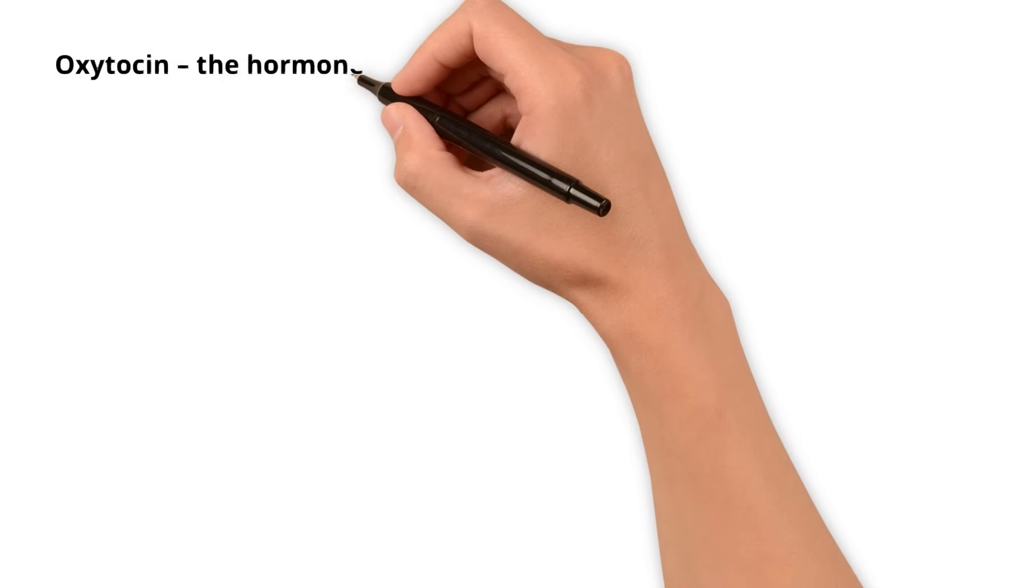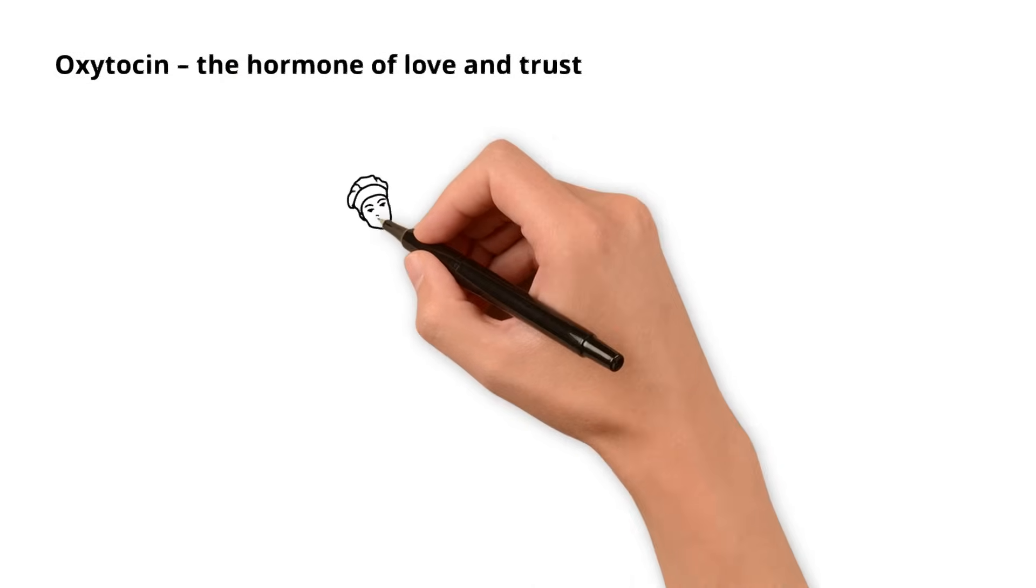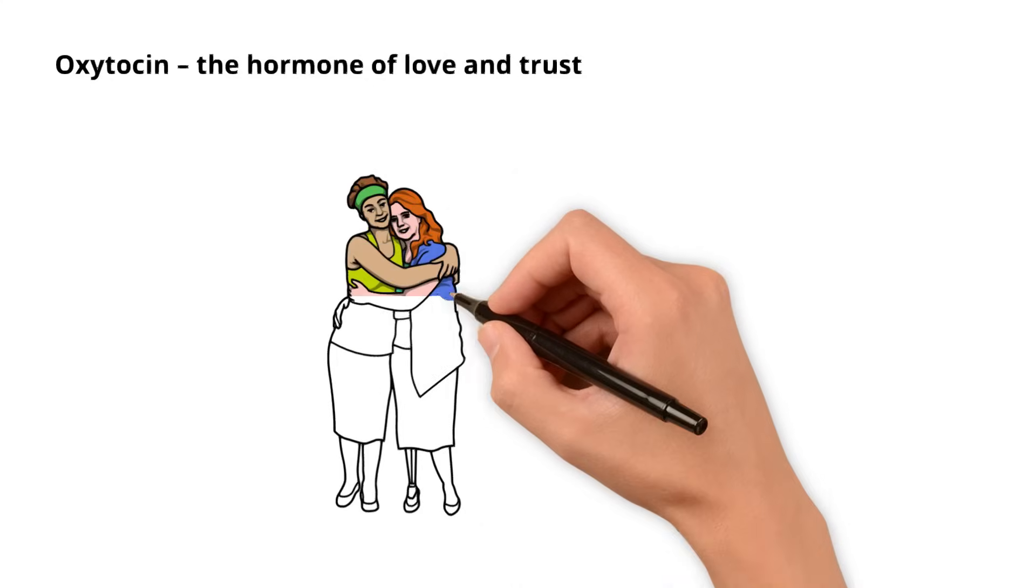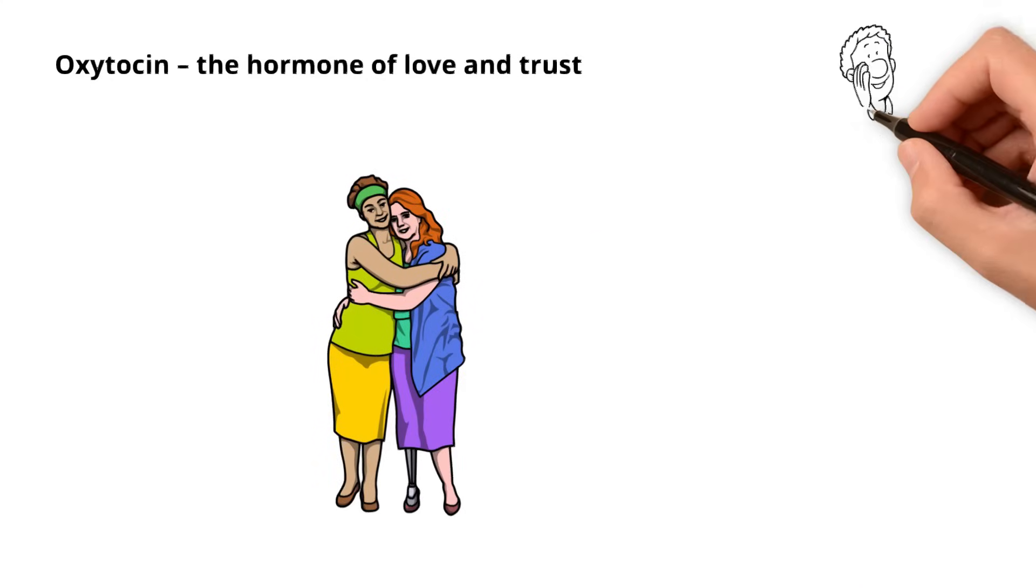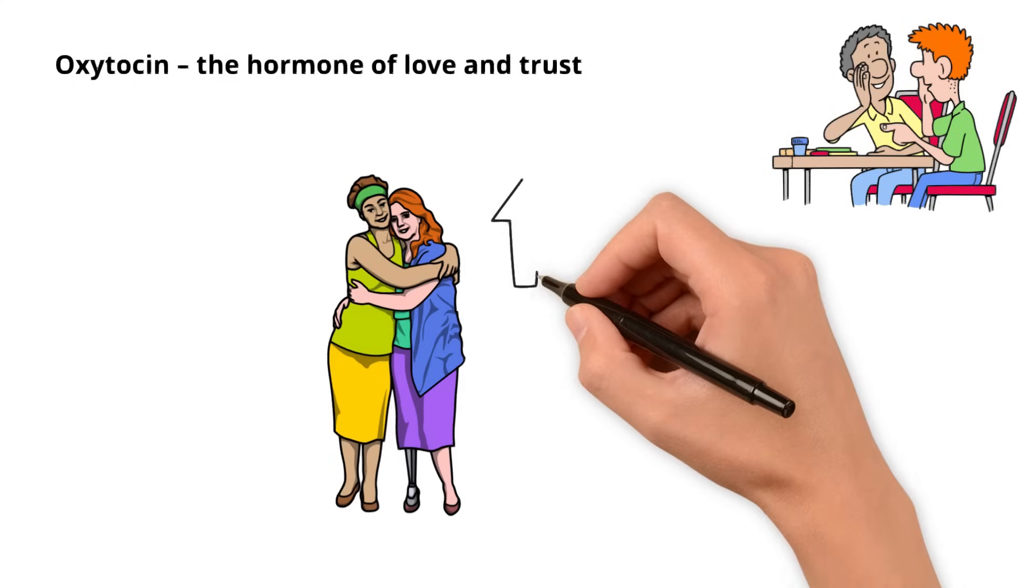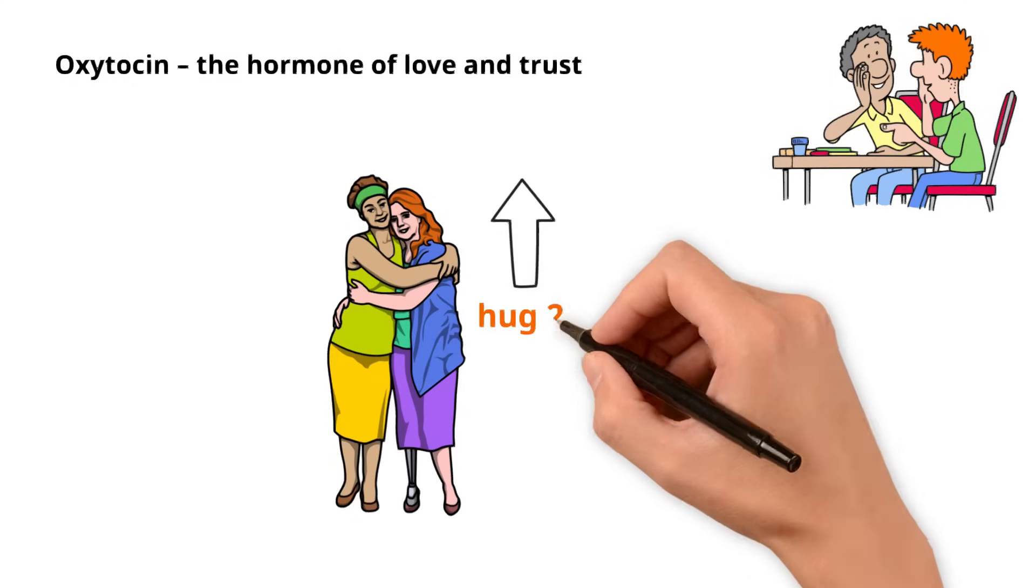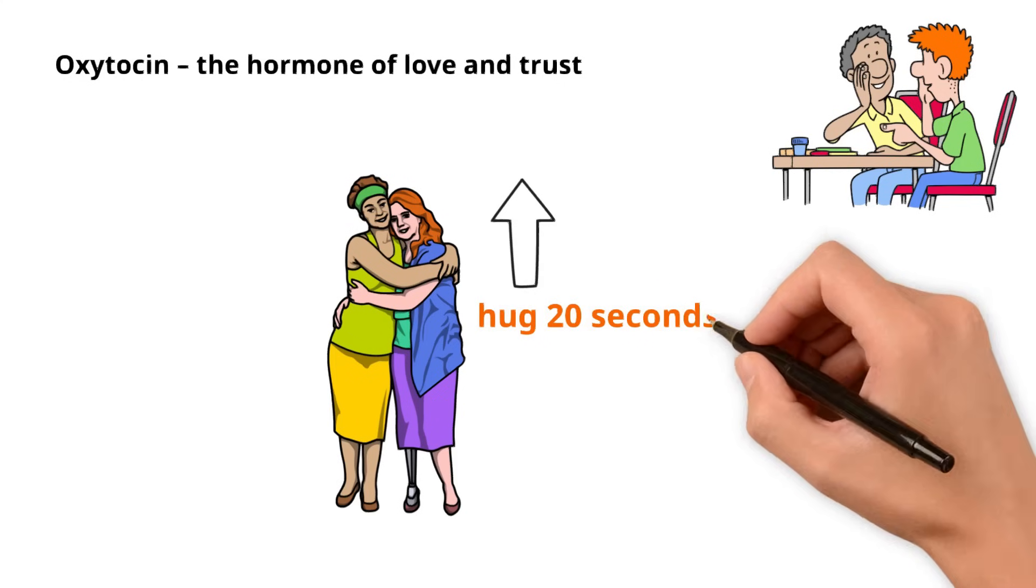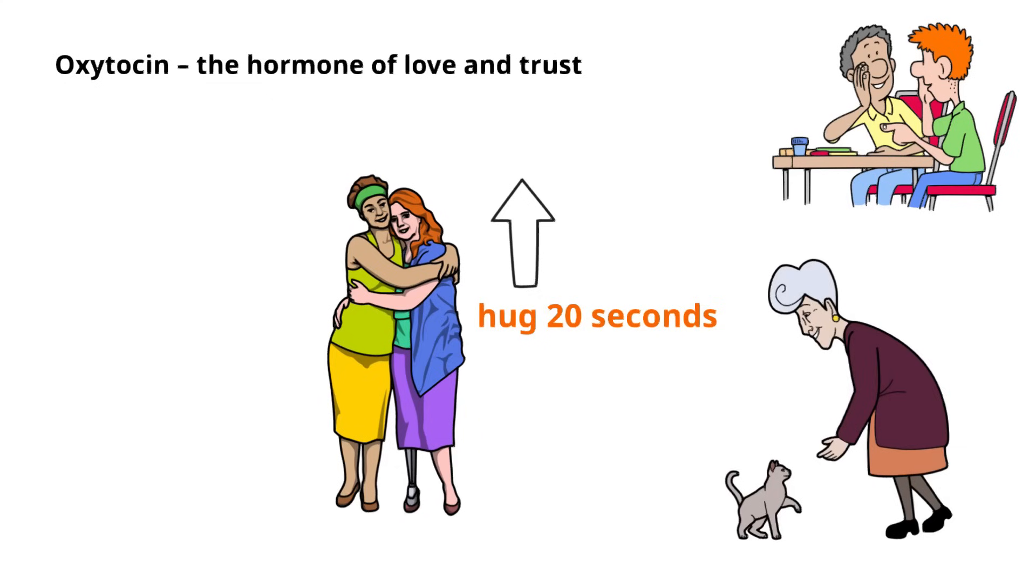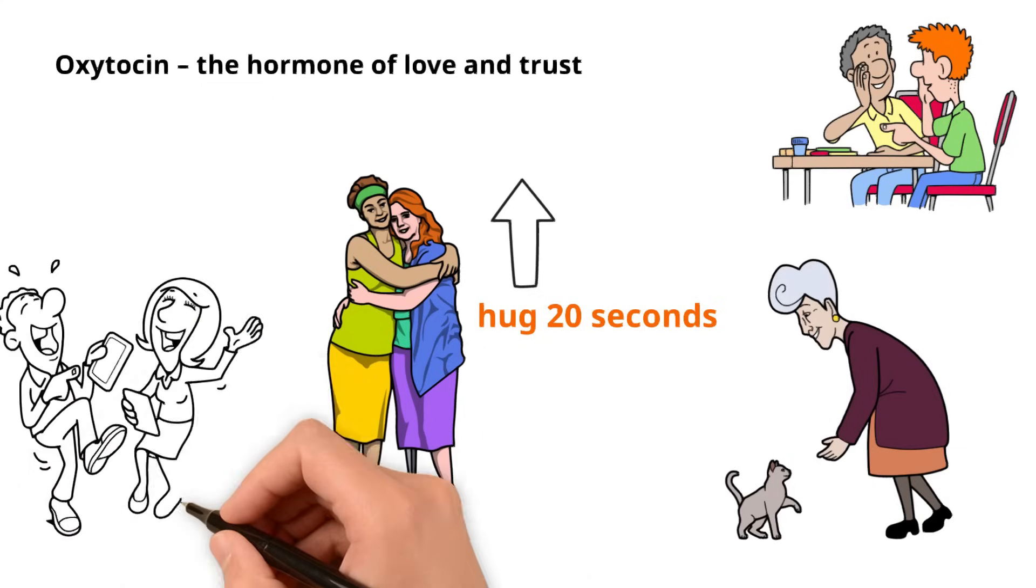Oxytocin, the Hormone of Love and Trust. Hugs, kind words, or even a smile, all of these stimulate the production of oxytocin. Studies by the University of California, Los Angeles, proved that hugs lasting 20 seconds can significantly increase oxytocin levels in the body. This explains why physical contact, even with a pet, is so beneficial for emotional health.